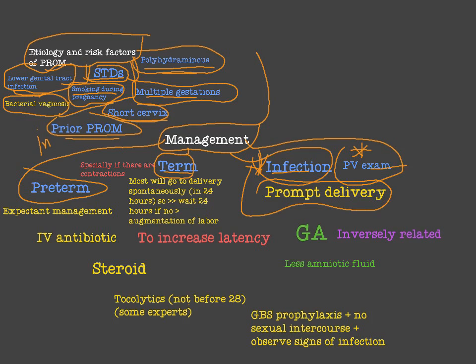Now let's move to term and preterm cases. In preterm cases, the management threshold is below 37 weeks, and some sources say below 34 weeks — this may vary depending on your source. The first line is expectant management until we reach term or develop a complication like infection.